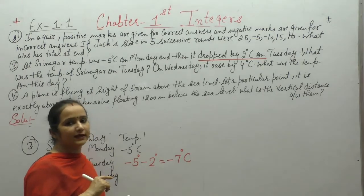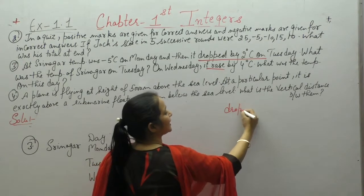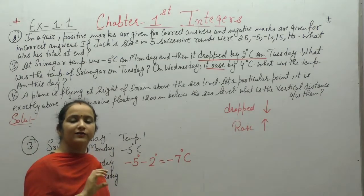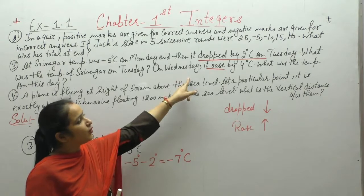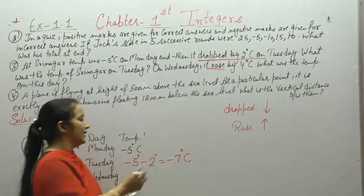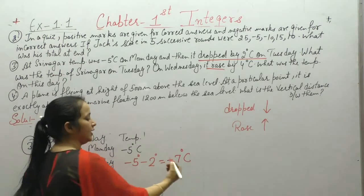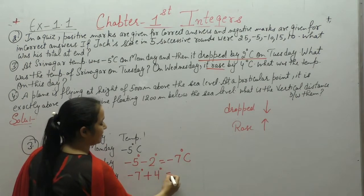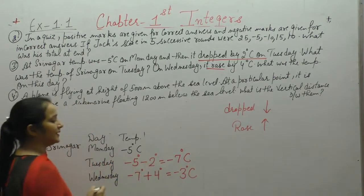On Wednesday, it rose by 4 degrees Celsius. 'Rose' means increased. 'Dropped' means temperature went down, 'rose' means temperature went up. The question says on Wednesday temperature rose 4°C — but this is not from Monday; it is from the previous day, i.e., Tuesday. So Tuesday's temperature was minus 7°C. It rose, so we add: minus 7 plus 4. The bigger term is negative, so 7 minus 4 is 3, giving minus 3 degrees Celsius.